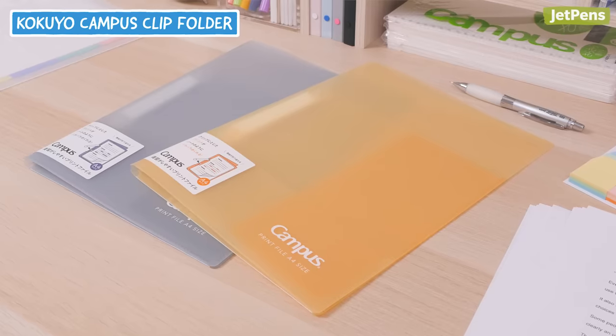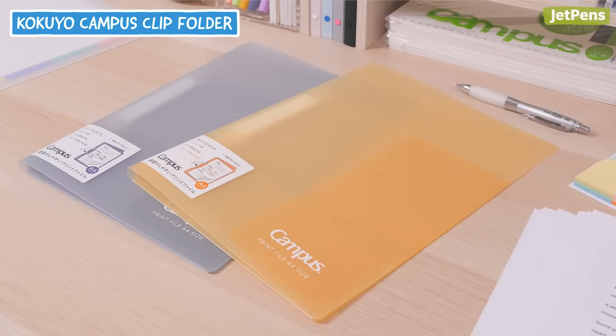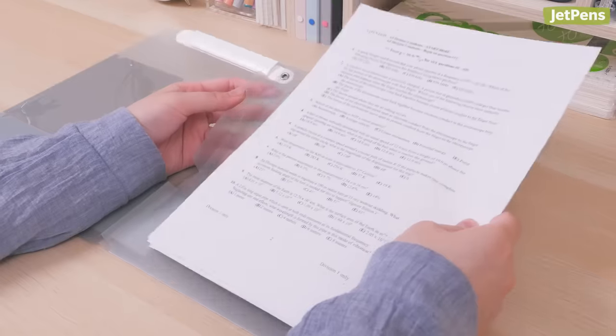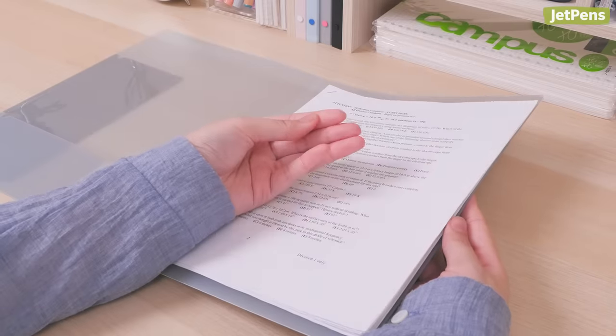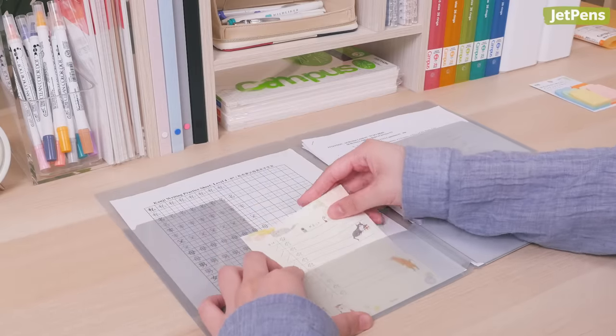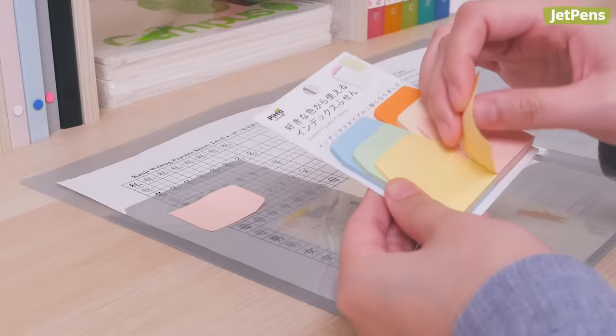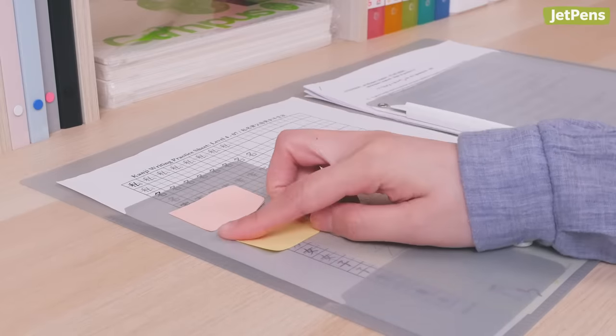If you don't need the large capacity of a binder but still want a way to keep your papers organized, check out the Kokuyo Campus Clip Folder. The large clip in the middle of the binder keeps papers in place while still letting you flip through them. There are three pockets inside the folder which come in handy when sorting other papers. The panel on the left side has a slick finish so you can keep sticky notes and index tabs on hand without damaging the folder's surface.